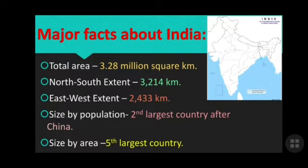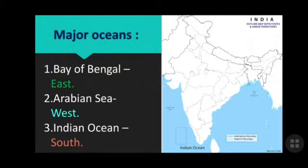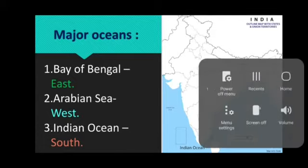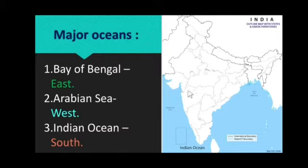Now we are going to see the physical divisions and some of the neighboring countries of India. First, let's look at the major oceans. There are three major water bodies surrounding India: the Bay of Bengal to the east, the Arabian Sea to the west, and the Indian Ocean to the south.